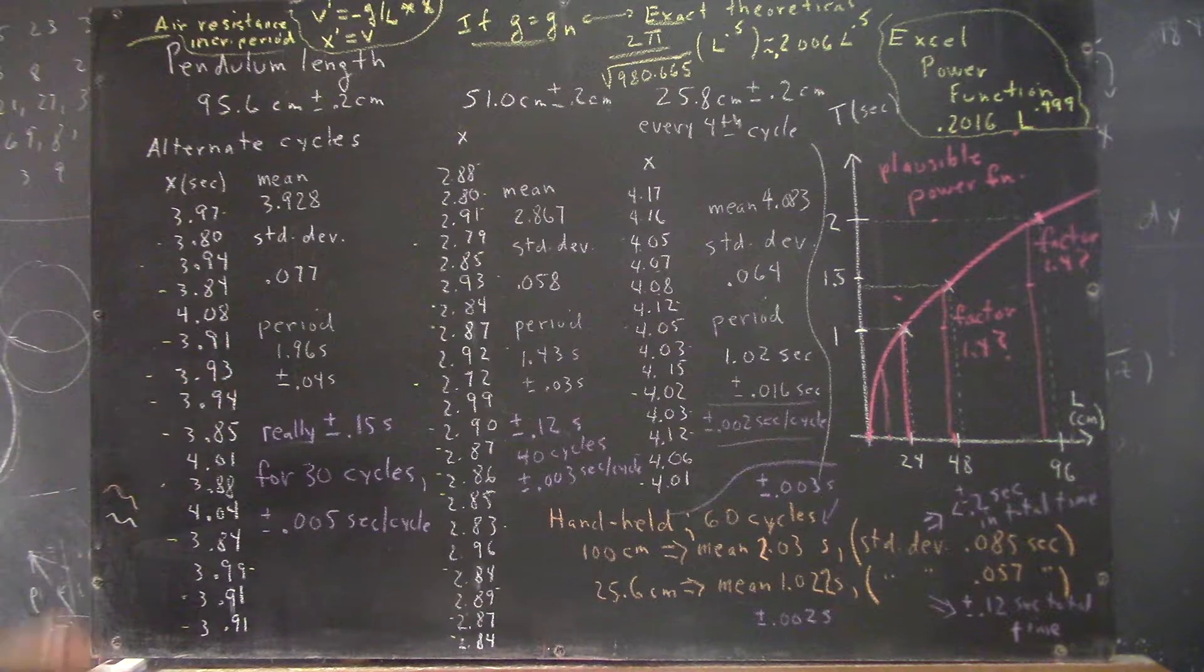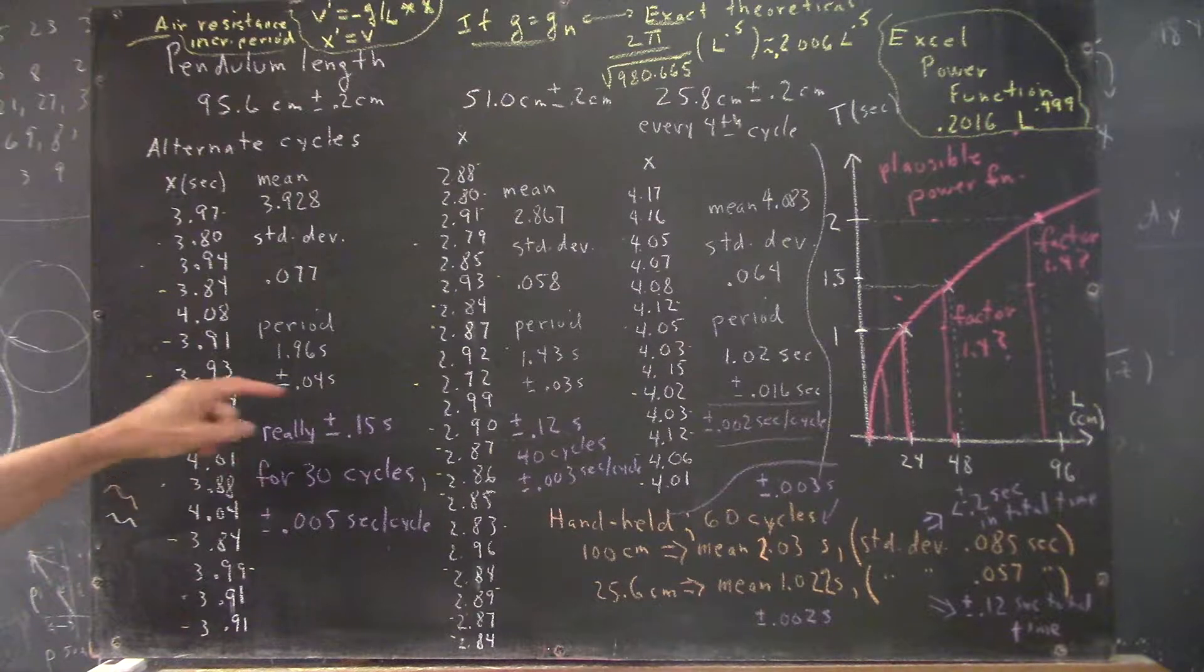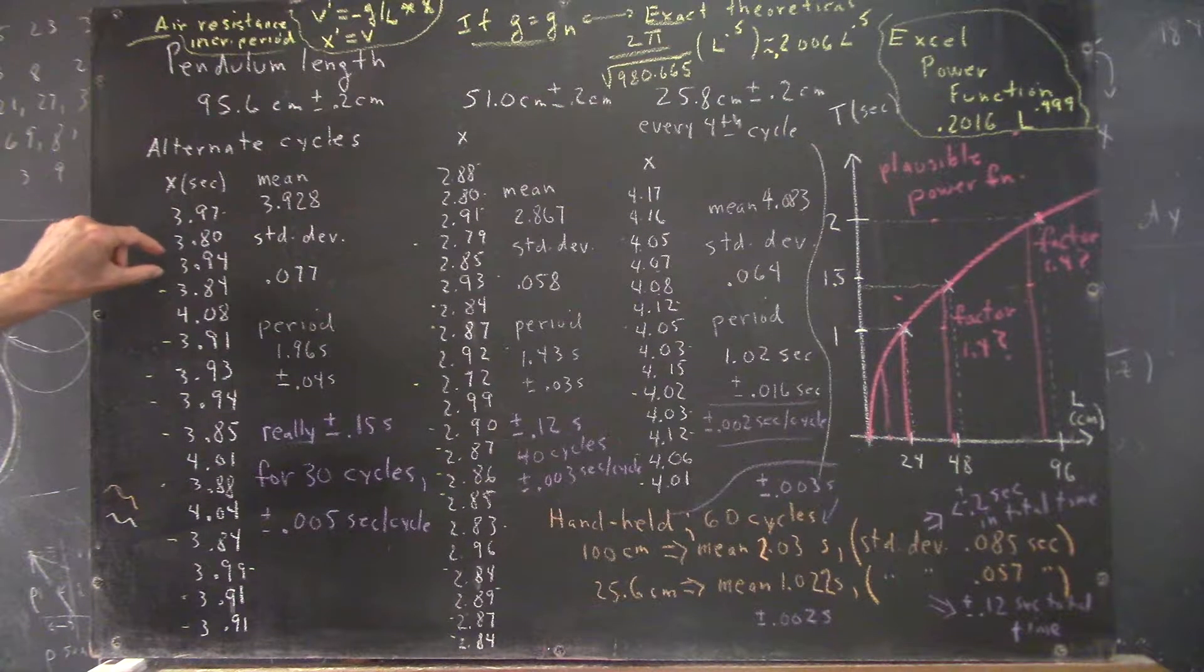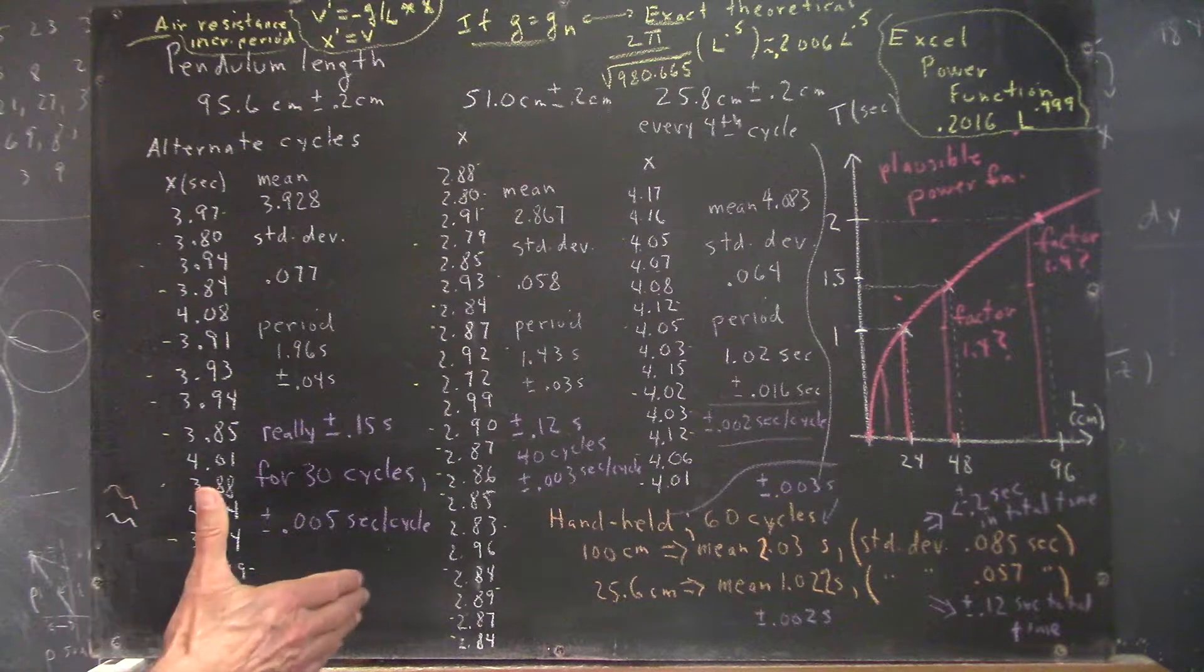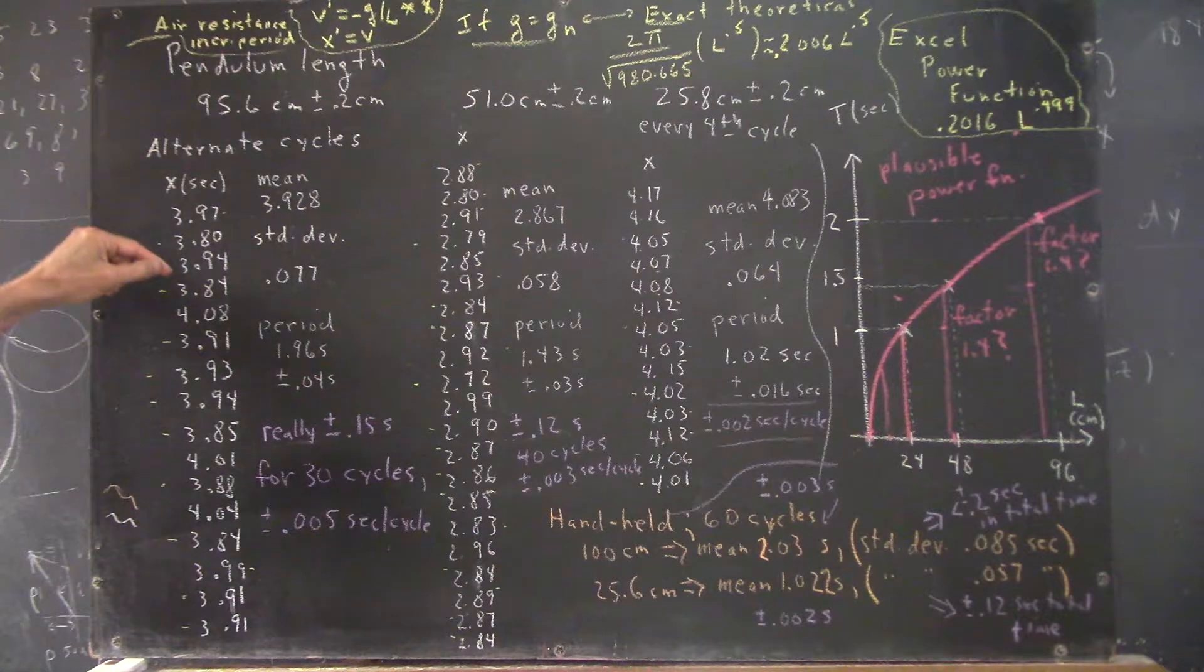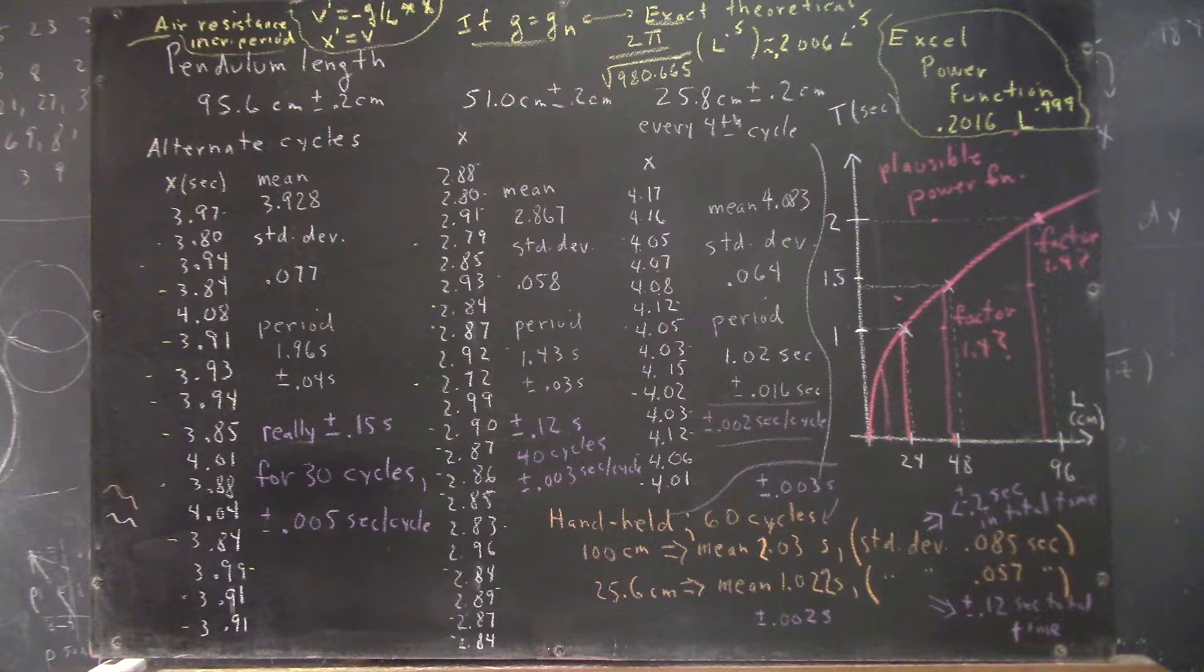But, the other thing is that this is what we would do if these were independent measures of the period. But they aren't independent, they're sequential. This one immediately followed this one, this one immediately followed this one, and so forth.